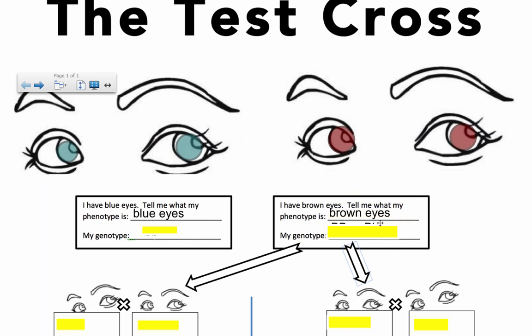So what are the genotypes? If we let big B be the allele for brown eyes and little b be the allele for blue eyes, then if I have blue eyes, it has to be because I have two of the little b's — two recessive alleles. So little b, little b. That's easy.